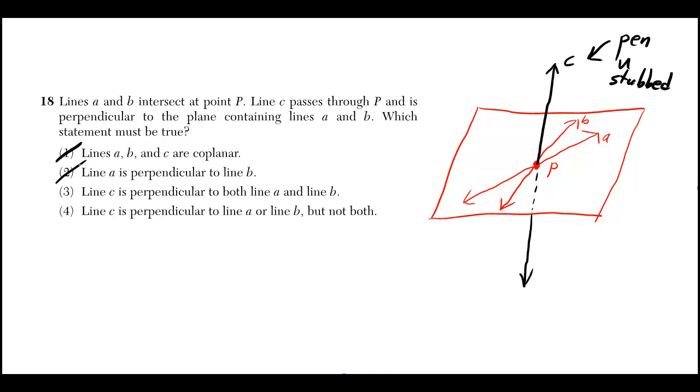It says that line C is perpendicular to the plane. So if that's true, well, it's actually going to be perpendicular to the lines that are in that plane.